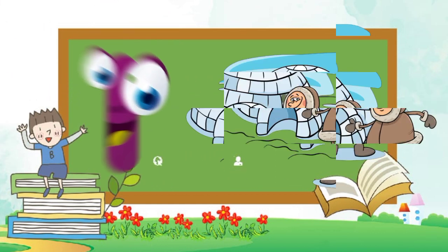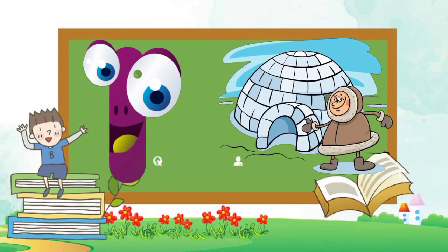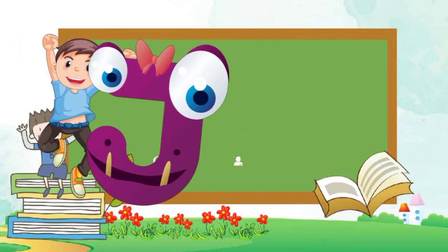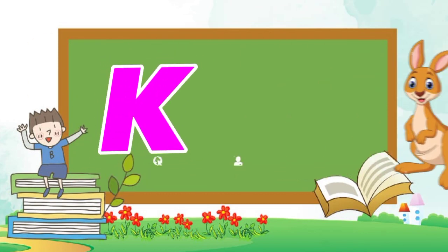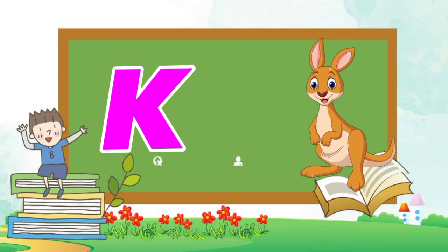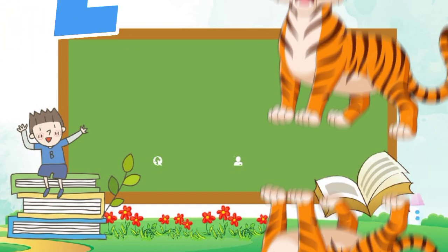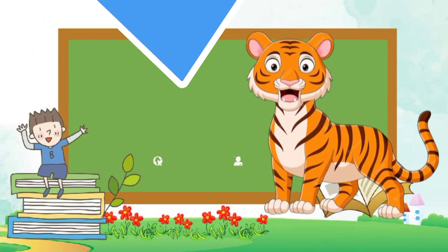I is for igloo, i-i-igloo. J is for jump, j-j-jump. K is for kangaroo, k-k-kangaroo. L is for lion, l-l-lion.